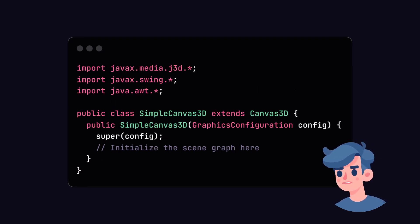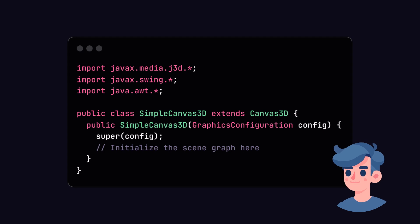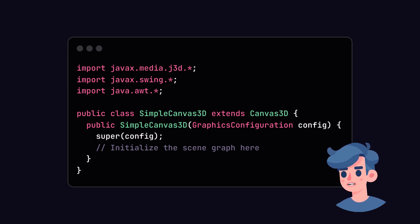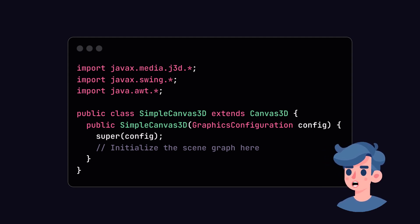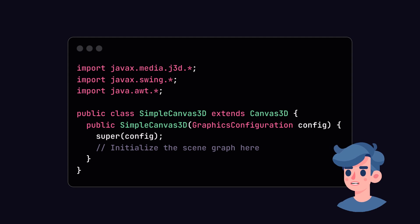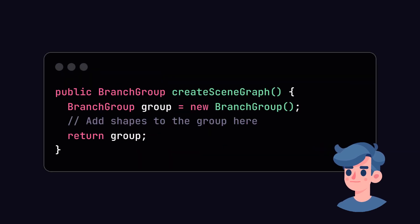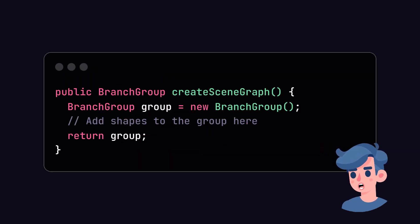We will create a simple Canvas3D class that extends Canvas3D, which will serve as our rendering surface. In this class we will also initialize the scene graph, which defines all the objects that will be rendered in the game. Now let's discuss the scene graph — Java 3D utilizes a hierarchical structure.